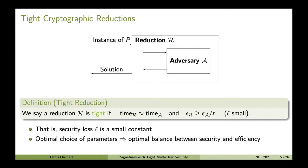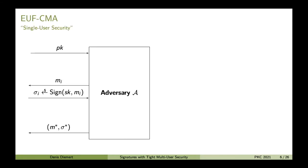Now that we know what a tight reduction is, I would like to go on and talk about multi-user secure signatures. To start with, I would like to recap the standard security notion for digital signatures, which is existential unforgeability under a chosen message attack, short EU-CMA, which I will refer to as single-user security mostly in this talk.